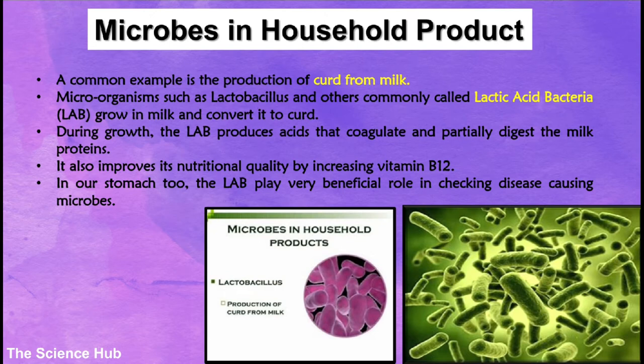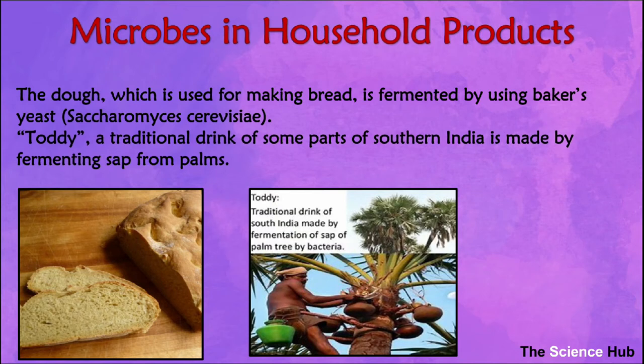The dough used for making bread is fermented by using baker's yeast, that is Saccharomyces cerevisiae. Toddy, a traditional drink of some parts of southern India, is made by fermenting sap from plants.